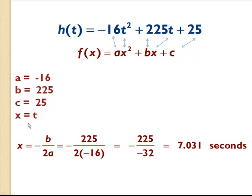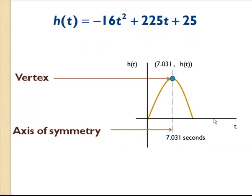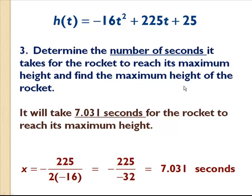Remember, in this example x equals t, so this is really telling us that t = 7.031 seconds, which represents our axis of symmetry — the t-coordinate of our vertex. Graphically, if this is our parabola, the vertex is at the top. The axis of symmetry is the imaginary line that splits the parabola in half. So t = 7.031 seconds is how long it takes the rocket to reach its maximum height.